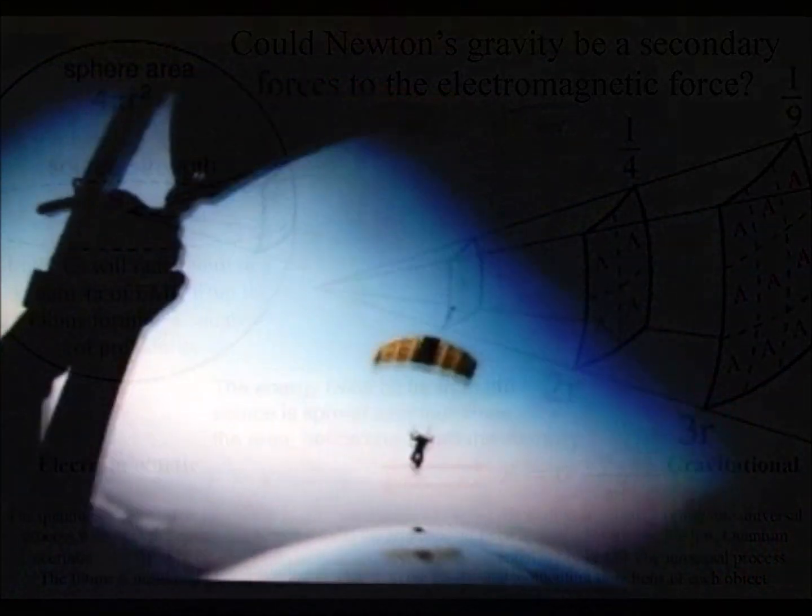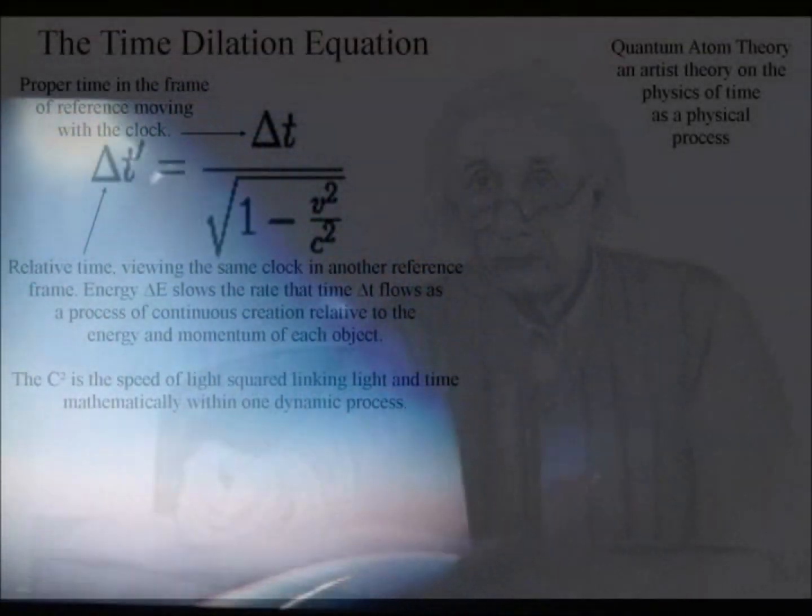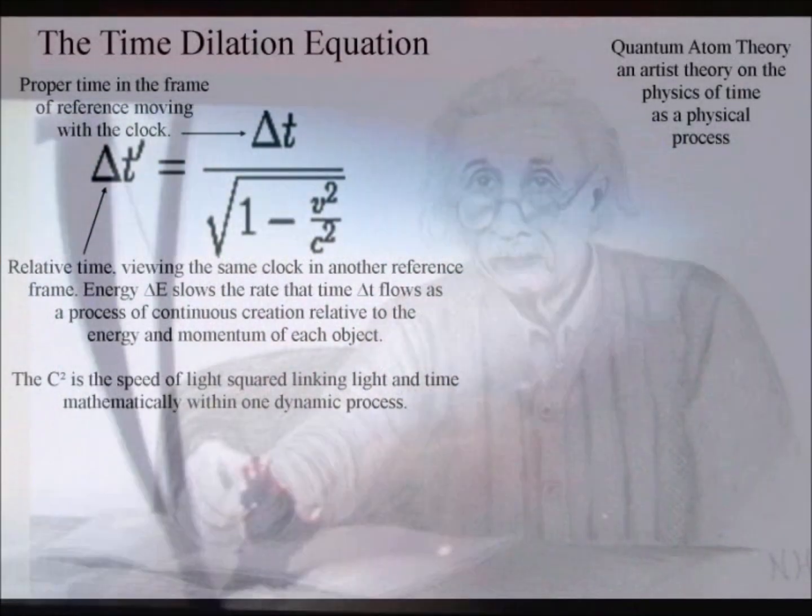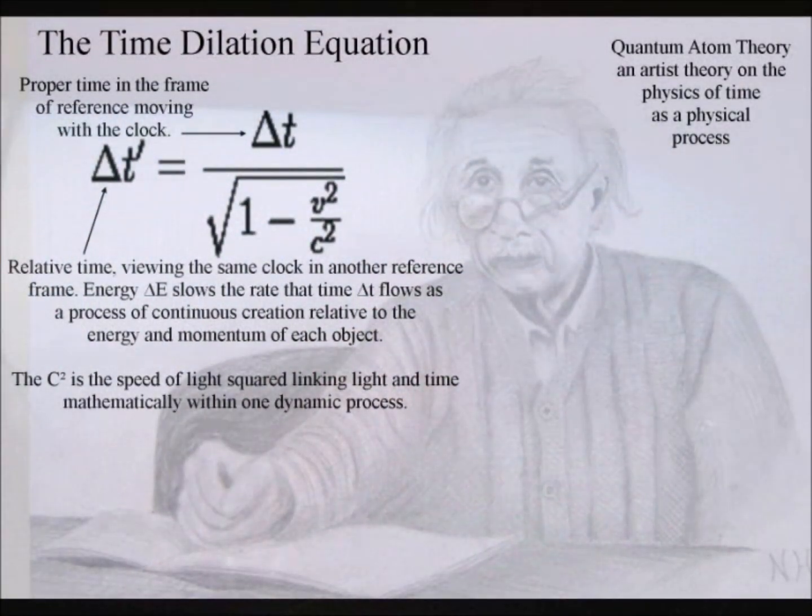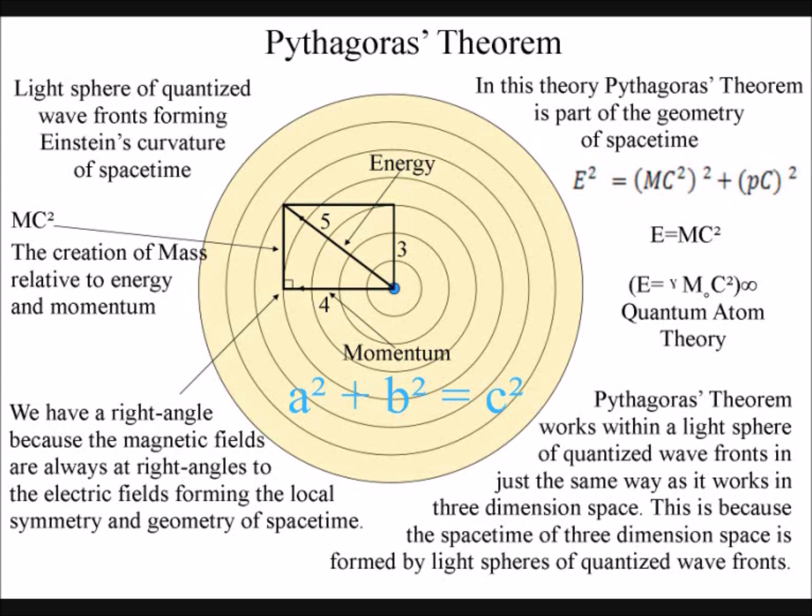The unity of this process can be seen in Einstein's relativity in the time dilation equation with the speed of light and velocity being squared. In relativity we also have Pythagoras' theorem, in which the three sides of a right-angled triangle are explained with a hypotenuse that is the side opposite the right angle equal to the sum of the squares of the other two sides.